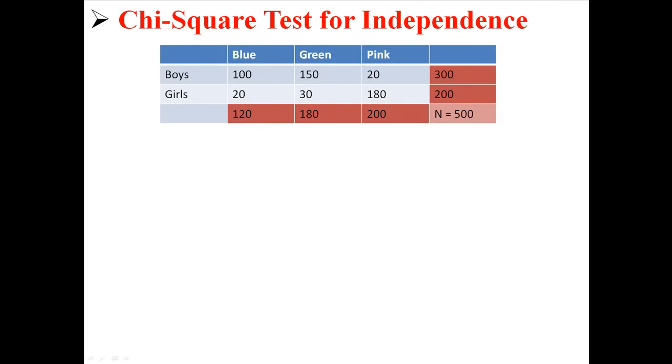So here is our table. On the bottom you can see that I have the column totals, 120, 180, and 200. And on the right I have the row totals, 300 and 200. And we had a total sample of 500 people. So we can use this information to calculate our chi-square.